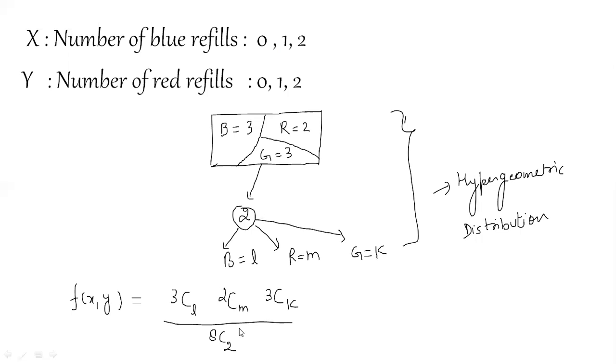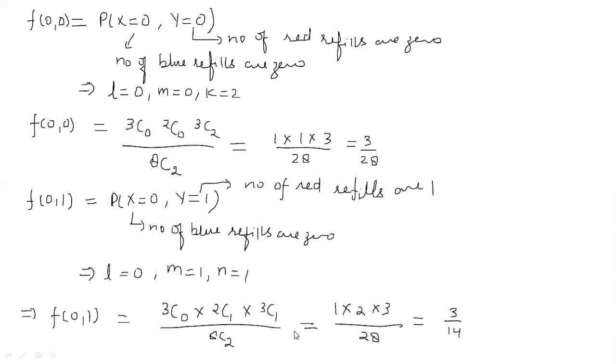And 8C2. 8C2 means total 8 ball hai humare paas. 8 mein se 2 ball nikalne ke total tarike, 8C2. To hum is formulae ki help se, hum saare pairs ke liye nikal sakti hai f ki value.